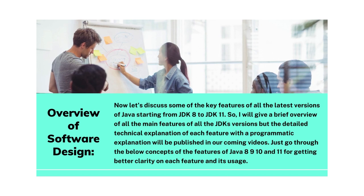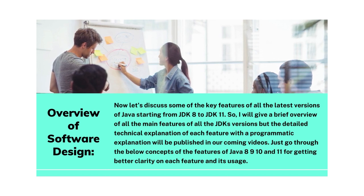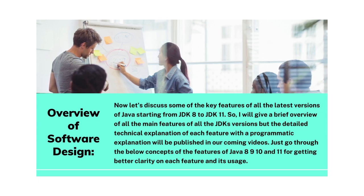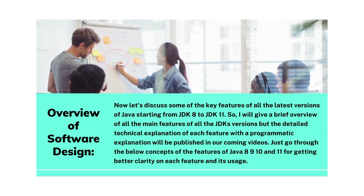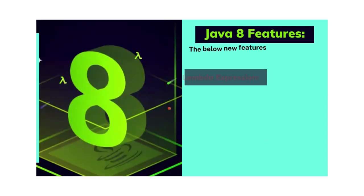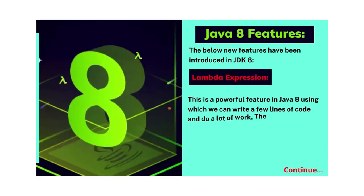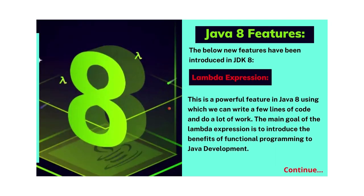I will give a brief overview of all the main features of all the JDK versions, but the detailed technical explanation of each feature with programmatic examples will be published in our coming videos. Just go through the concepts of Java 8, 9, 10, and 11 for getting better clarity on each feature and its usage. Now let's understand Java 8 features in detail. The first feature of JDK 8 is Lambda Expression.